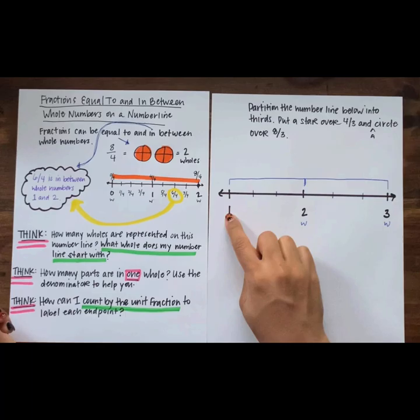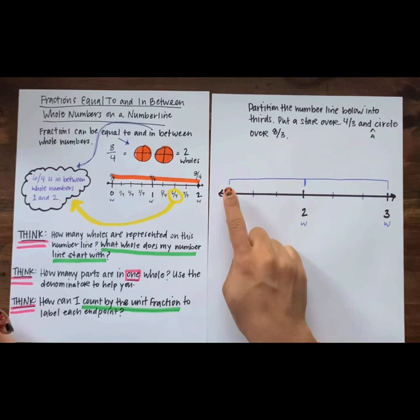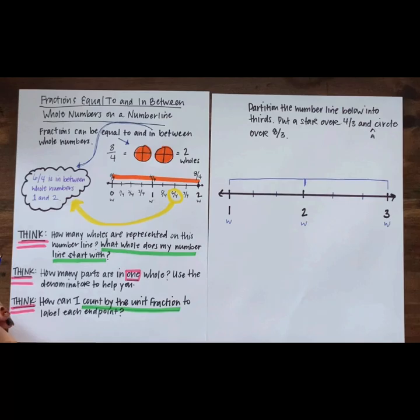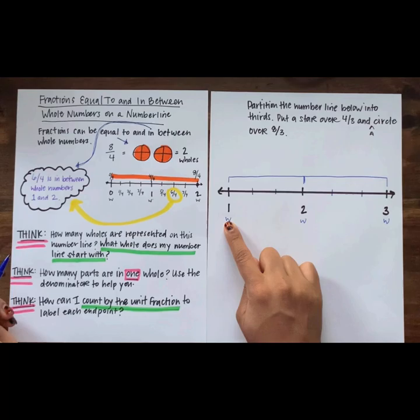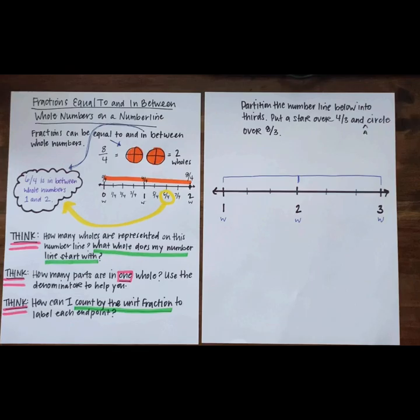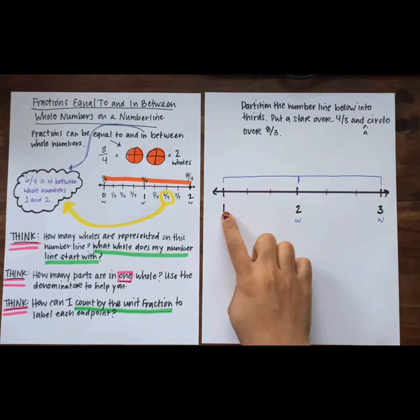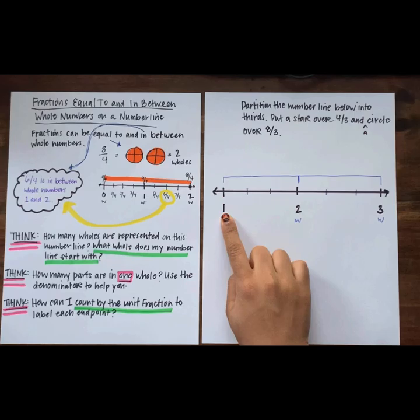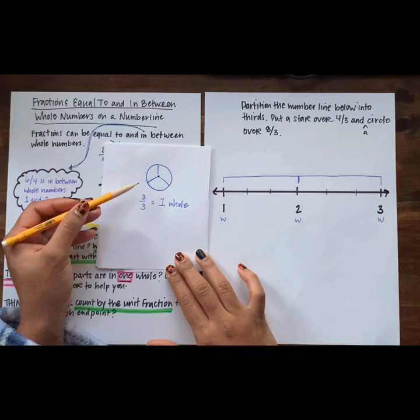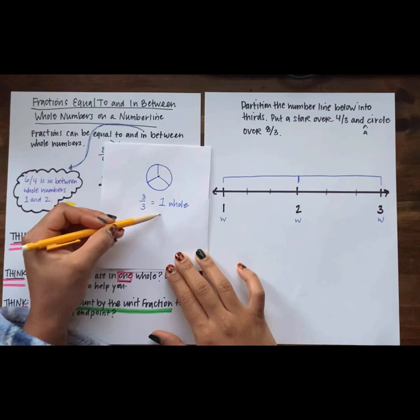Should we start labeling at zero-thirds? No — we can't start at zero-thirds because we aren't showing a zero on this number line. Without seeing that part of the number line, how can we figure out how many thirds are the same as one whole? We know that three-thirds makes one whole, so we can label right here with three-thirds to start. Remember, fractions that have the same numerator and denominator are equal to one whole.